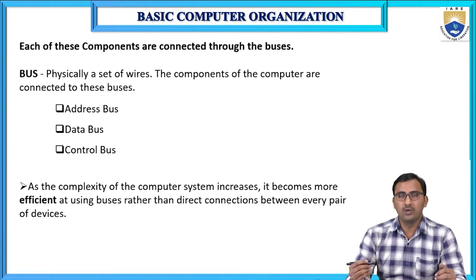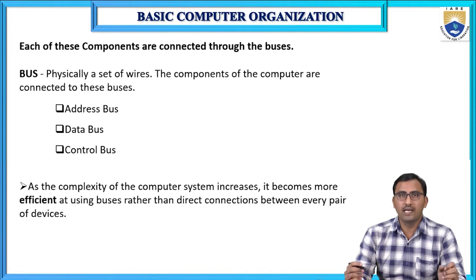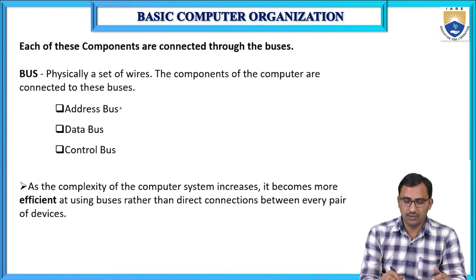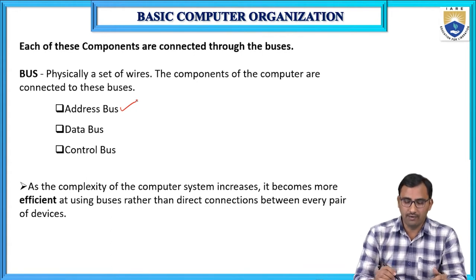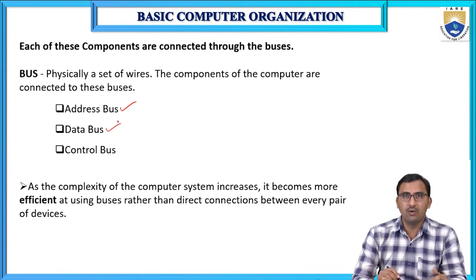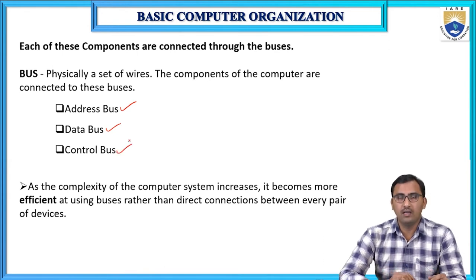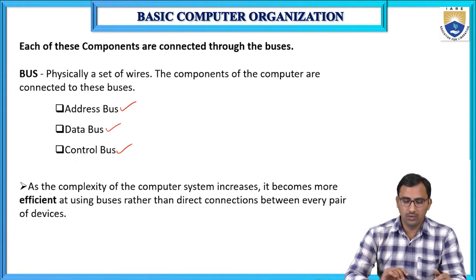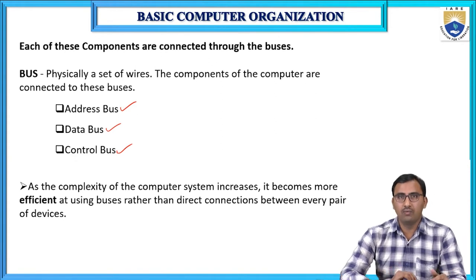That is the use of the bus. In a basic computer, we have three types of buses: the first one is the address bus, the second one is the data bus, and the third one is the control bus. These are the three main types of buses.